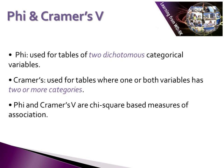Phi and Cramér's V. Phi is used for tables of dichotomous categorical variables — and dichotomous means variables that have only two categories, so gender: male, female. Cramér's V is used for tables where one or both variables has two or more categories.